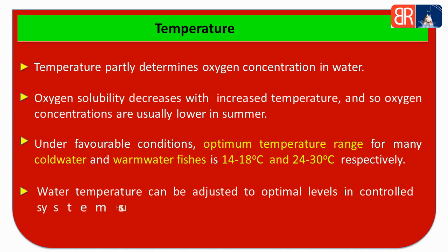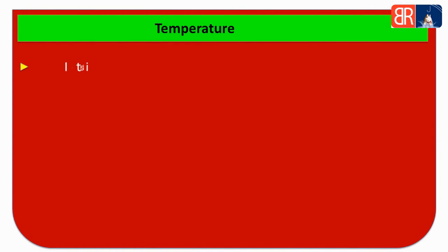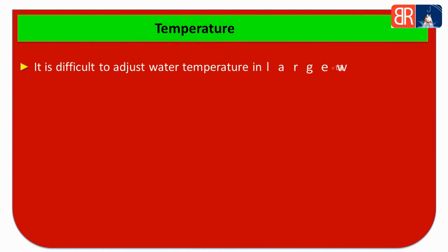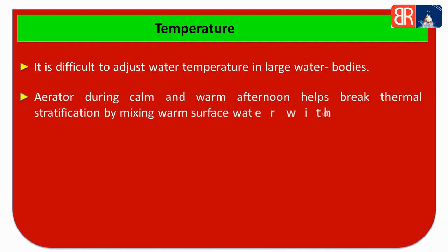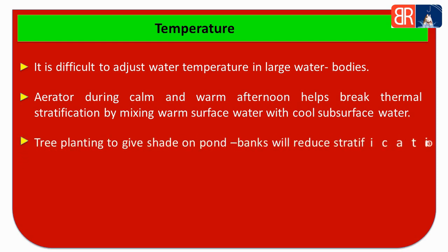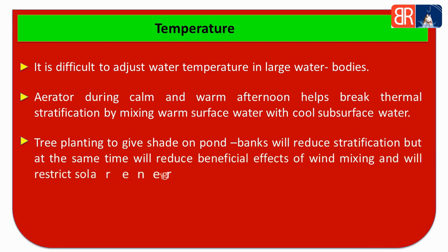Water temperature can be managed in controlled conditions such as hatcheries, but in large water bodies like reservoirs, it becomes difficult to manage. We can use aerators in the afternoon to break thermocline by mixing warm surface water with cold subsurface water. We can also plant trees on the banks of ponds — their shade will break the thermocline, but at the same time it will reduce some beneficial effects of wind mixing and will restrict solar energy for photosynthesis. This is the effect of temperature on aquaculture.